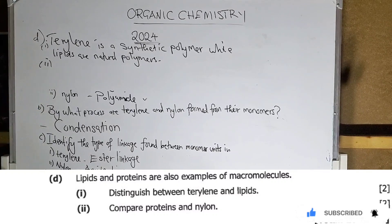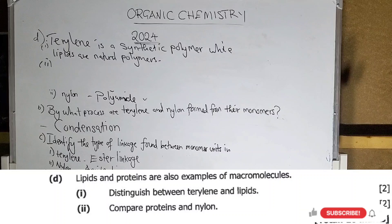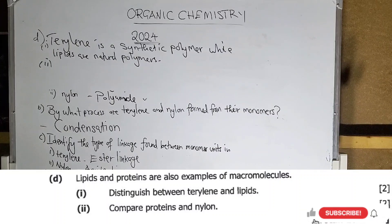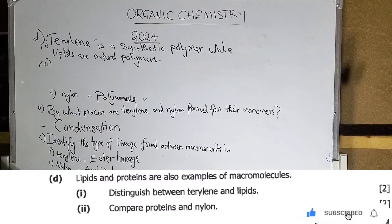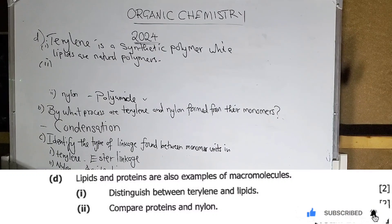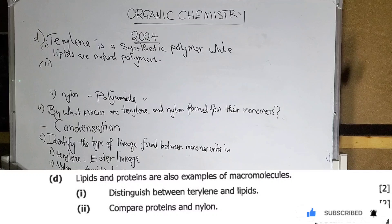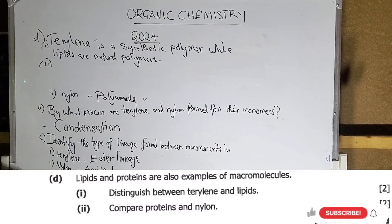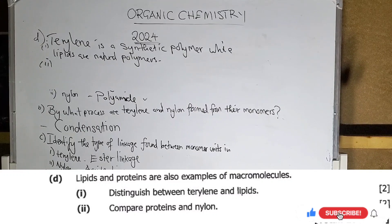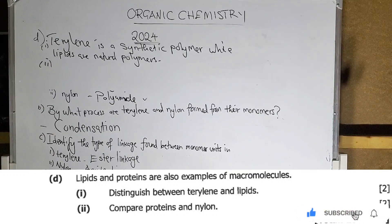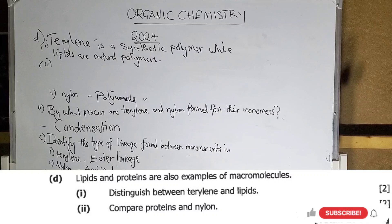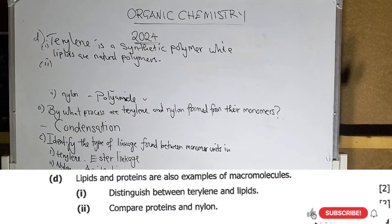Number two, it's saying compare proteins and nylon. Now, know this. Nylon here is a synthetic polymer. Specifically, a condensation polymer. This one is a natural polymer. It's a natural polymer. Specifically, it is condensation polymer.